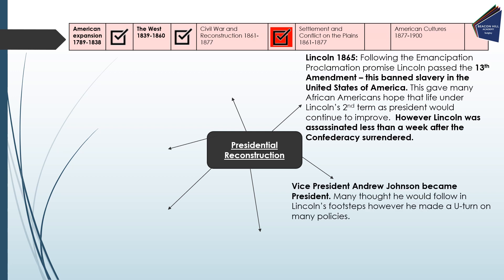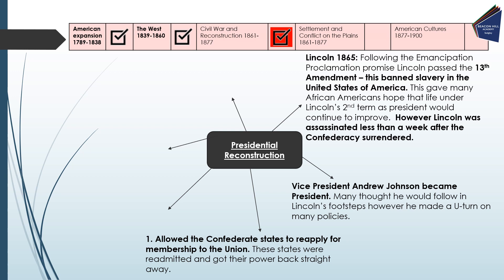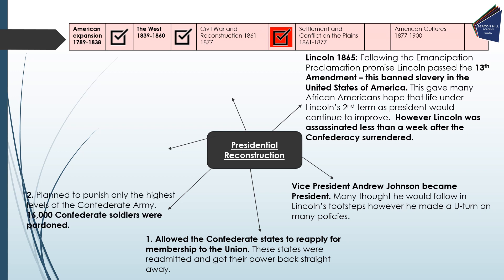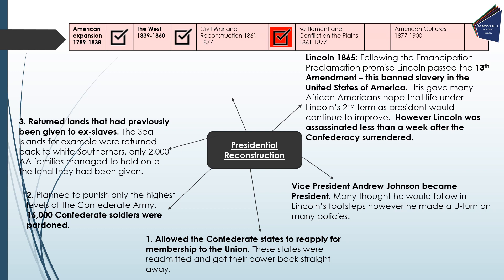Vice President Andrew Johnson became president. Many thought he would follow in Lincoln's footsteps, but that is not what he did. He allowed the Confederate states to reapply for membership to the Union and they were readmitted with their power back straight away — no real punishment for their secession. He planned to punish only the highest levels of the Confederate army, meaning 16,000 Confederate soldiers were actually pardoned. He also returned land previously given to ex-slaves — the Sea Islands, for example, were returned to white Southerners, with only 2,000 African-American families managing to hold onto their land.